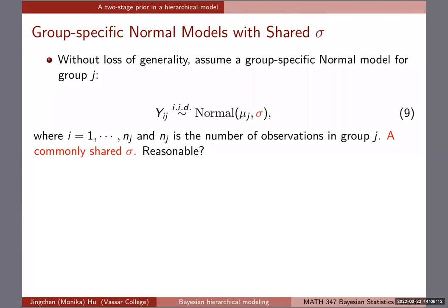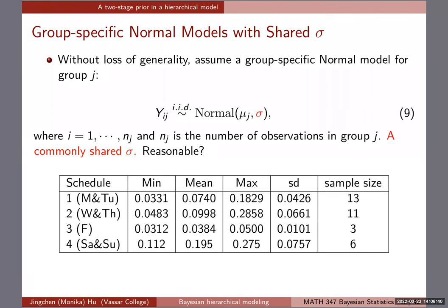To start simply, let's take a shared sigma for now, so we only focus on getting a two-stage prior ready for mu_j. Without loss of generality, assume a group-specific normal model for group j with a commonly shared sigma. Whenever you specify a model, it's important to check whether it's a reasonable assumption given the data. I want you to talk to your neighbors for one to two minutes about whether using a commonly shared sigma is a good idea, given what the data is telling us — this is slide 15.